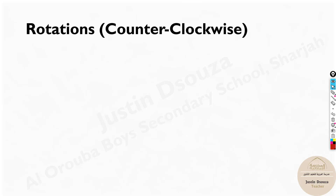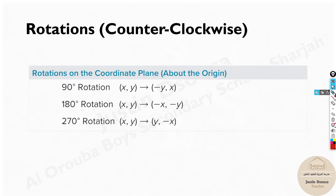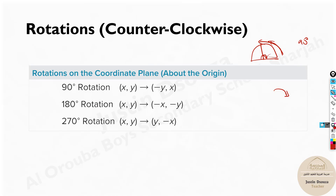These are all counterclockwise. How do we measure an angle on the protractor? We usually use this direction. So if it's 90 degrees, we don't go clockwise — we go counterclockwise. This is 90 degrees from here to here. So all these formulas are about the origin counterclockwise.